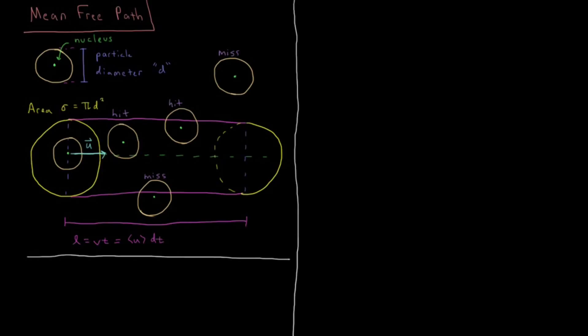In this video we're going to look at the average distance a gas particle travels before it collides with another one, and that value is called the mean free path.